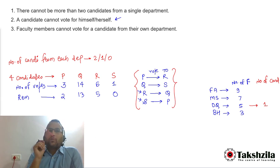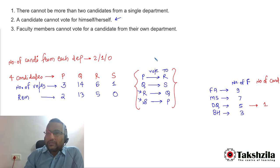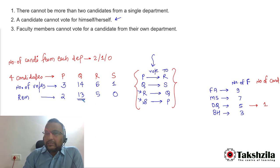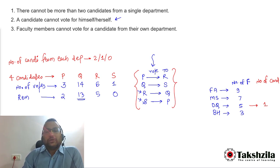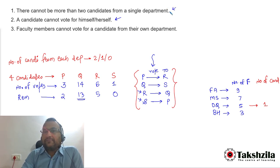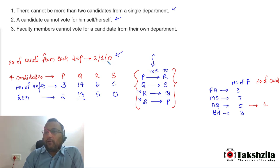A candidate cannot vote for himself or herself, and a faculty member cannot vote for a candidate from their own department. So the 13 votes that Q received from non-candidates came from departments from which Q does not belong. The number of candidates from a single department can be two, one, or zero — there cannot be more than two.